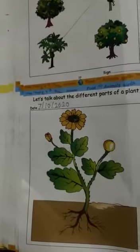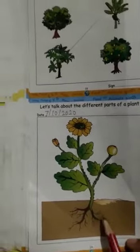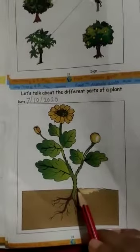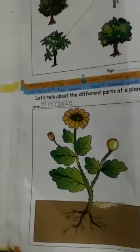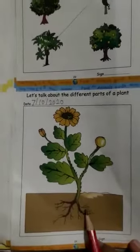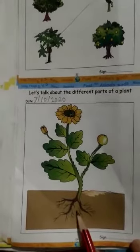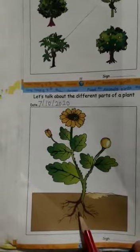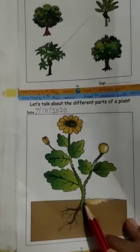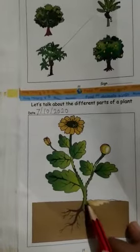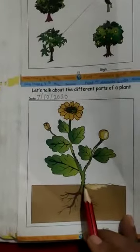The two main parts of the plant are the root and the shoot. The root usually grows under the ground — see, under the ground. While the shoot usually grows above the ground. See here — ground level, above the ground.